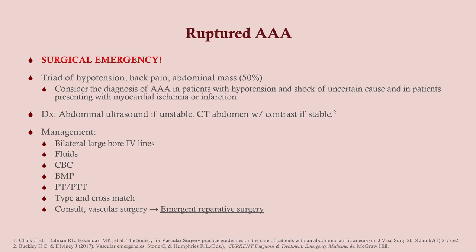A ruptured Triple-A presents with the classic triad of hypotension, back pain, and palpable abdominal mass — but that's only present in half of patients. In an elderly patient with unexplained hypotension or loss of consciousness, think ruptured Triple-A. If unstable, go for abdominal ultrasound; if stable, CT abdomen with contrast. Once confirmed, give IV fluids, order CBC, BMP, and surgical labs, and consult vascular surgery for emergent repair.